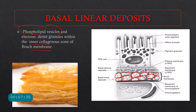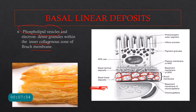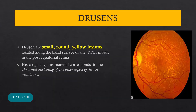Normally, Bruch's membrane is a compact pentalaminar structure, but because of the deposition of basal linear deposits, it is converted into a puff pastry-like appearance — with lots of layers and spaces in between caused by the accumulation of deposits.